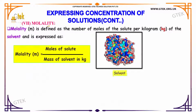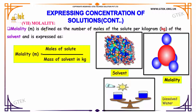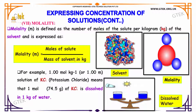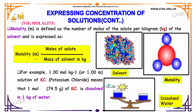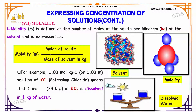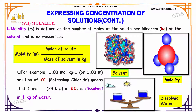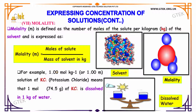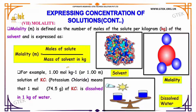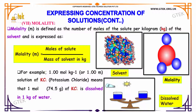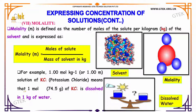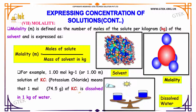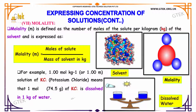Let's move on to molality, m, which is defined as the number of moles of solute per kilogram of solvent. Molality equals moles of solute divided by mass of solvent in kilograms. For example, a 1 mole per kilogram solution of potassium chloride means that 1 mole — 74.5 grams of KCl — is dissolved in 1 kilogram of water.